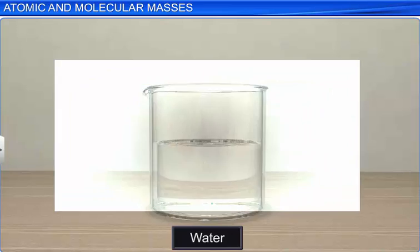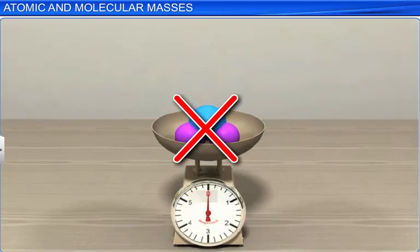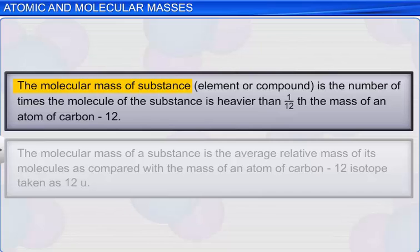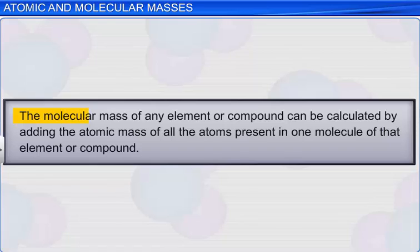Like atoms, molecules are also very small. Hence, their mass cannot be determined by weighing them. Therefore, the molecular mass is determined relative to the mass of a carbon atom taken as 12U. The molecular mass of a substance, element, or compound is the number of times the molecule of the substance is heavier than 1 twelfth the mass of an atom of carbon-12. In other words, the molecular mass of a substance is the average relative mass of its molecules as compared with the mass of an atom of carbon-12 isotope taken as 12U. The molecular mass of any element or compound can be calculated by adding the atomic mass of all the atoms present in one molecule of that element or compound.